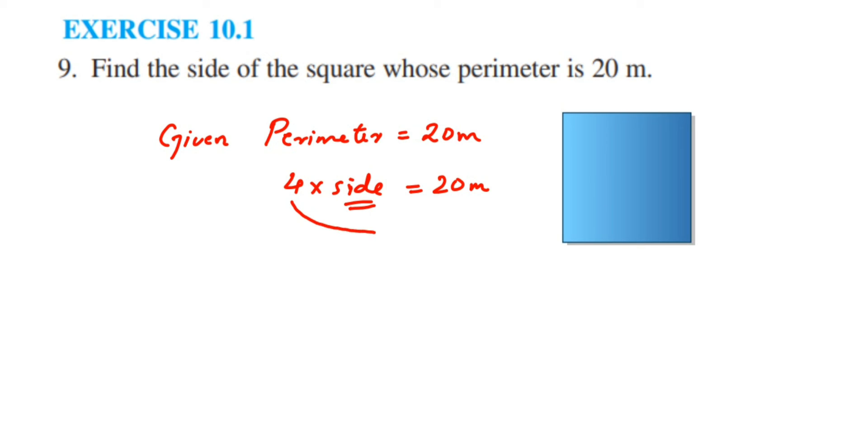Now 4 is in multiplication. When you transpose this to the other side of the equation, it comes in division. So side will be equal to 20 divided by 4.